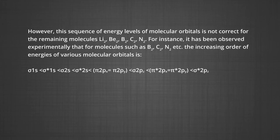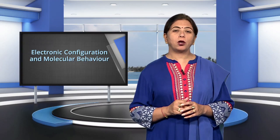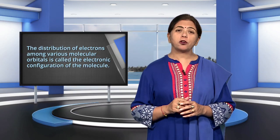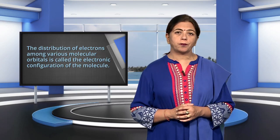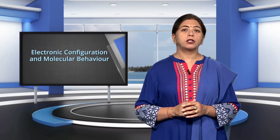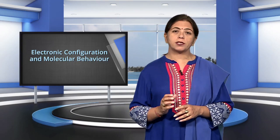You have to learn this series to write the molecular electronic configurations. Now, a very important topic is the electronic configuration and molecular behavior. The distribution of electrons among various molecular orbitals is called the electronic configuration of the molecule. From the electronic configuration, it is possible to get important information about the molecule.